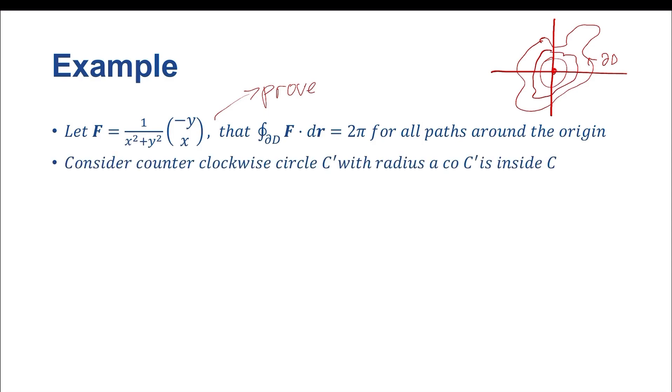What I would like to start with is consider a counterclockwise circle C' with a radius A, so that this C' curve is arbitrarily small and is inside whatever other curve we're dealing with. So let's say that this is our curve C' and this is our curve C. We're going to choose A, the radius here, to be A, and A is going to be small, such that we can take a limit.